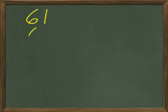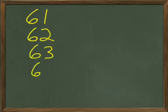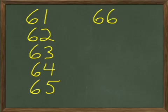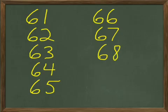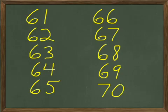Let's do our 60s, ending at 70. This top one's going to be 61. And then 62, 63, 64, 65. And then 66 up here, 67, 68, 69, 70. Let's grab the green pen and tick these off: 61, 62, 63, 64, 65, 66, 67, 68, 69, 70.